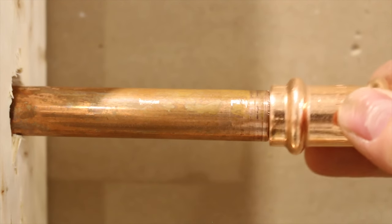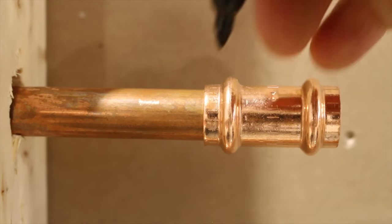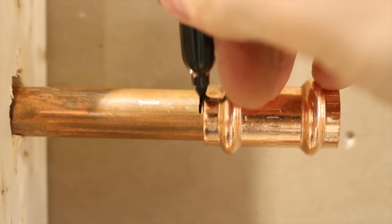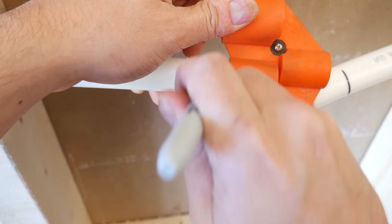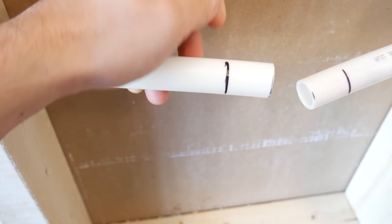For ProPress fittings, insert the fitting fully and mark it before pressing it. And for SharkBite fittings, use a dedicated depth gauge or the depth chart from their website to get it done.